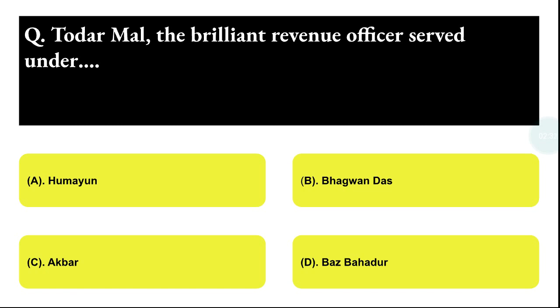Next question: Todar Mal, the brilliant revenue officer, served under whom? Option C: Akbar, Option D: Mahathur. The correct answer is option C, that is Akbar.